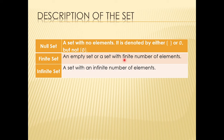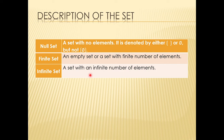Examples of finite sets include the number of subjects in Grade 7, the number of weeks in a year, the number of days in a month, or the numbers 1 to 10. An infinite set is a set with an infinite number of elements — for example, the multiples of 5: 5, 15, 20, and so on. Other examples are the number of hairs on your head, the number of stars, or all numbers.